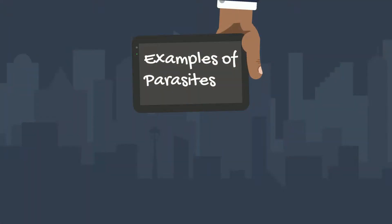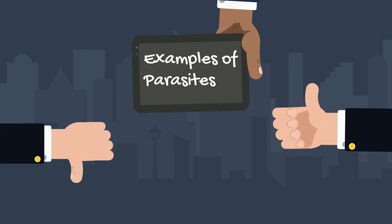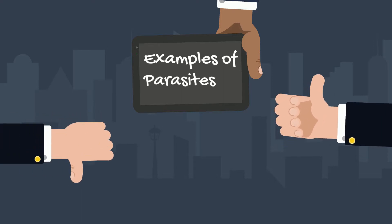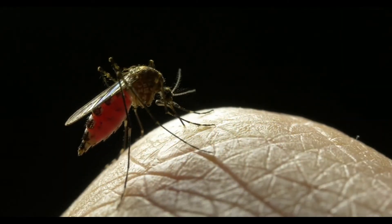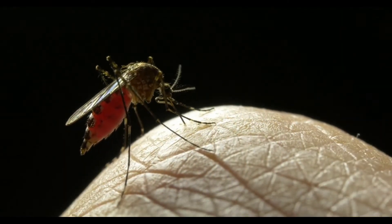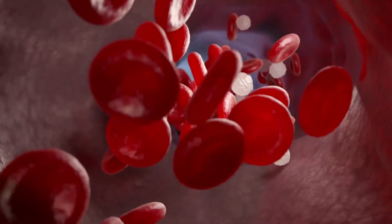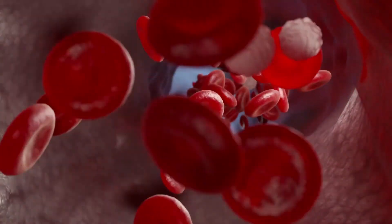Let's take a look at a couple of examples. The protozoa plasmodium causes malaria, which is a worldwide disease. The plasmodium enters the bloodstream of the host from a mosquito bite. It lives in the host's blood but eventually infects the red blood cells, which can lead to malaria.